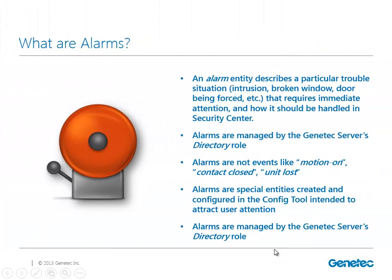First, what is an alarm? An alarm is an entity that describes a particular trouble situation. For example, if a door is being forced, I can use alarms to let the guards or operators know that something is going on within the system. Let's remember that the alarms are managed by our Genetech server, the directory role.